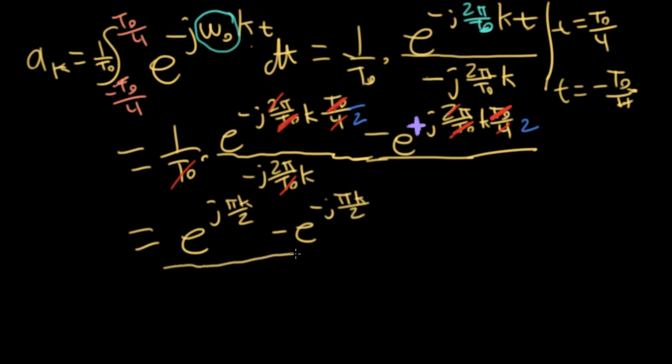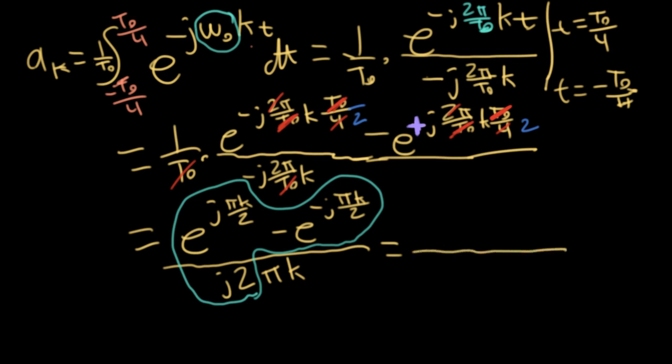You should look at this and think, hmm, I have e to the j something minus e to the minus j something. And this is all over a thing that has a 2 and a j in it. That should scream out to use Euler's formula. So if we use Euler's formula on this, we can replace it with a sine and write it as sine pi k over 2 divided by pi k. There's one particular integer that's problematic, and that's the case for k equals 0. And for k equals 0, we have sine of 0 equals 0. We have 0 in the denominator, so we have a 0 over 0 indeterminate form. So we have to think about how we'll deal with that particular special case. The formula here only works obviously for k that's not 0.